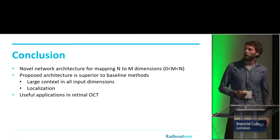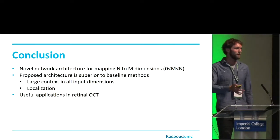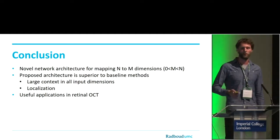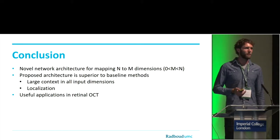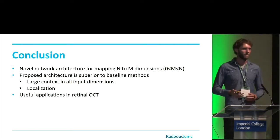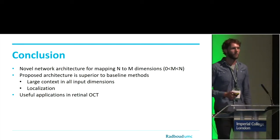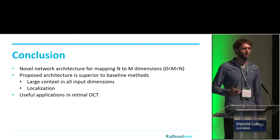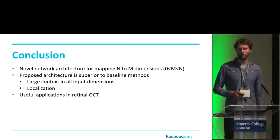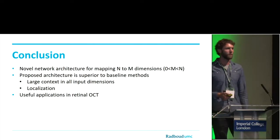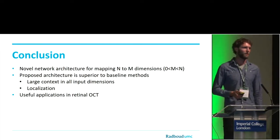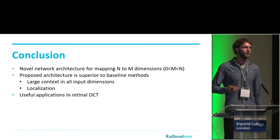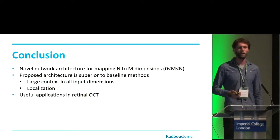To conclude, we introduced a new neural network architecture that allows mapping N input dimensions to M output dimensions — performing segmentation in a subset of the input dimensions. We compared it to two baseline methods and showed that the ability of this architecture to integrate context in all input dimensions, combined with the ability to do accurate localization, provides beneficial results compared to the two baselines. We see useful applications in retinal OCT, but I am sure there are other fields in medical imaging where it might be applicable. If you have ideas or want details on the implementation, feel free to contact me. Thank you for your attention.